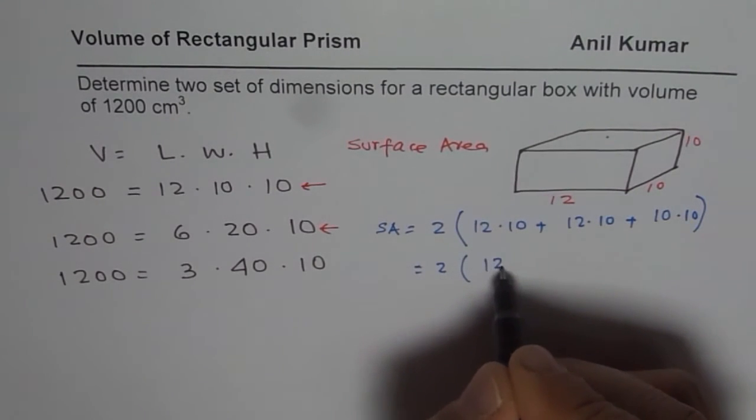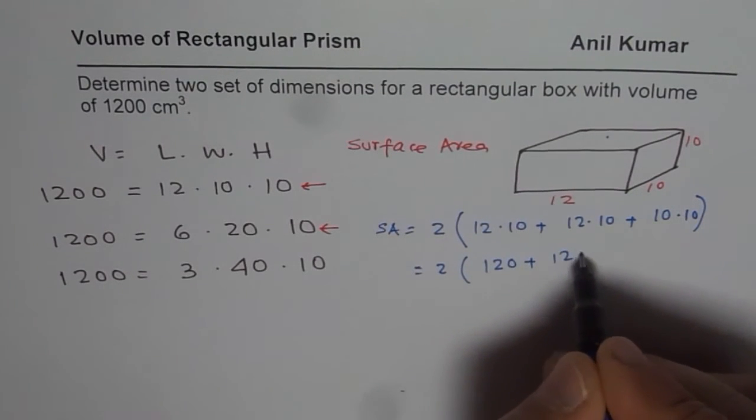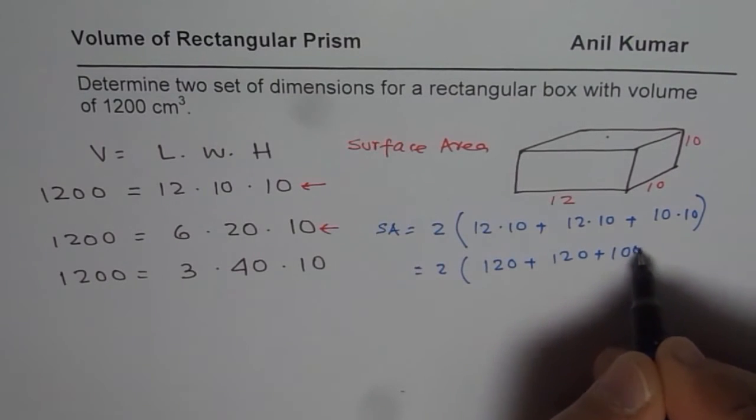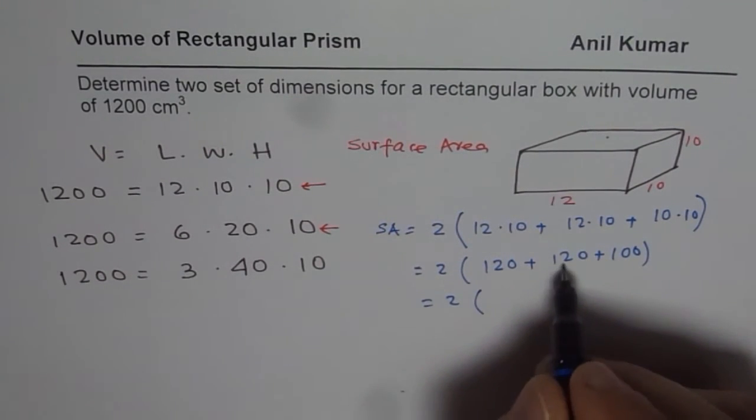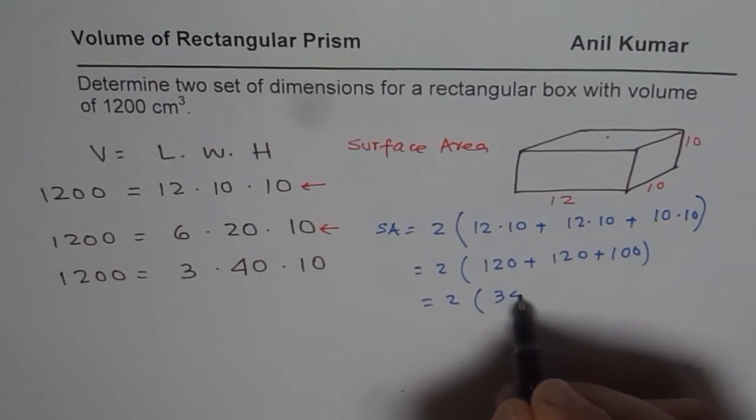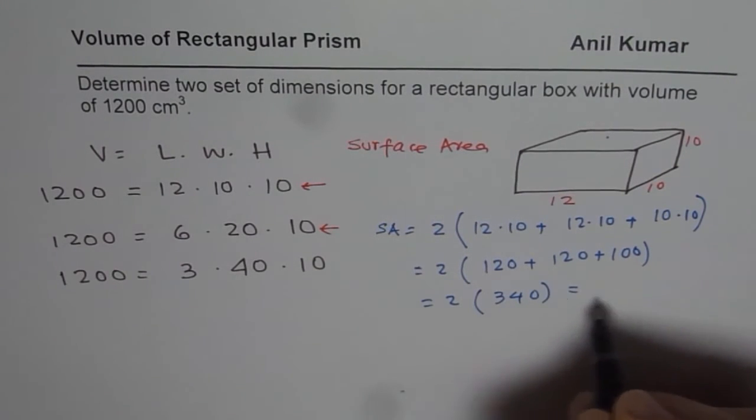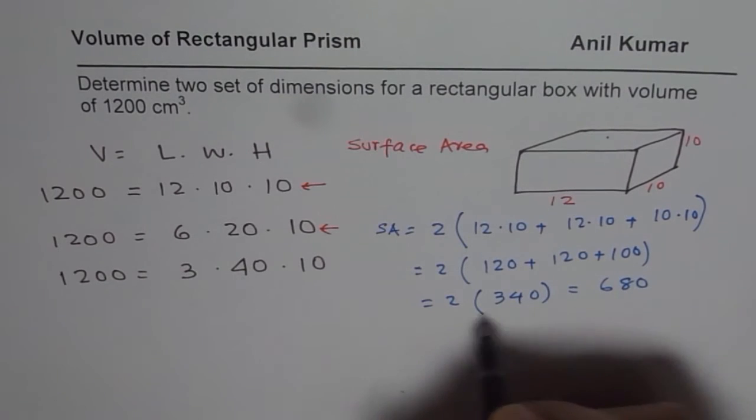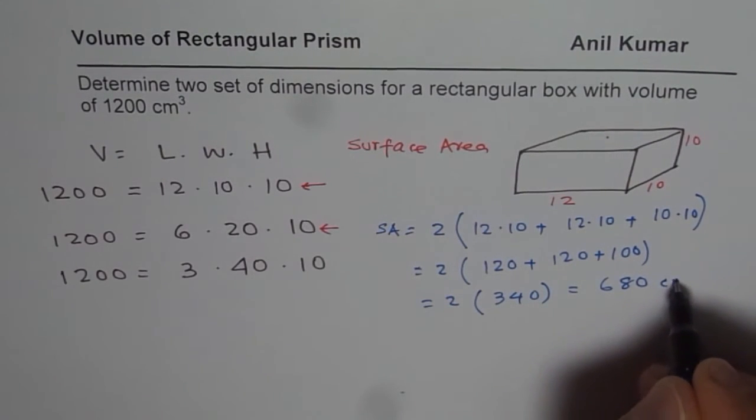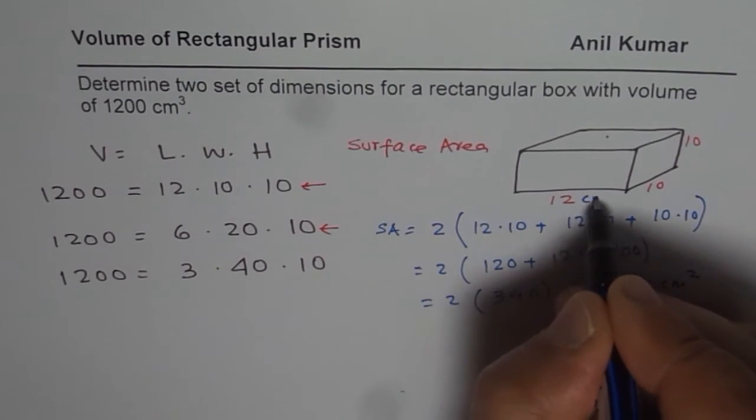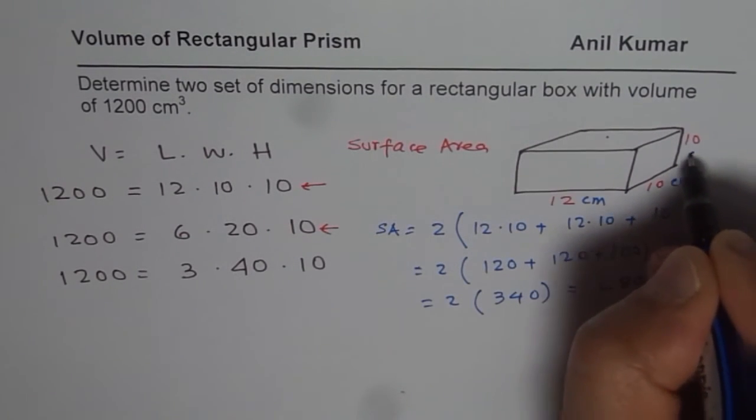So 12 times 10 is 120 plus 120 plus 100. And then there's 2 times 240 plus 100, which is 340. And when you add this up, you get 680. And the surface area units should be, if this is centimeters, centimeters square. So this is all centimeters.